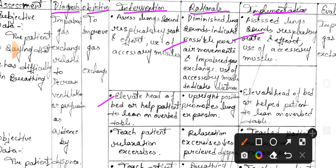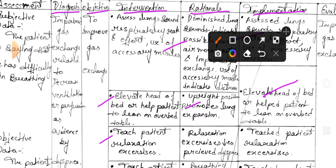Second intervention: elevate the head of the bed or help the patient to lean on an over-bed table. Rational: upright position promotes lung expansion. Implementation: elevate the head of the bed and help patient to lean on the table. Third intervention: teach patient relaxation exercises. Rational: relaxation exercises decrease perceived dyspnea.